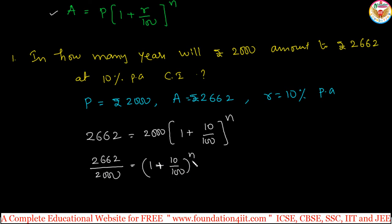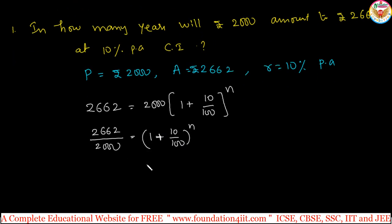To find the n value, we need to make the bases the same. That means we have to simplify this first. Simplify separately LHS and RHS. We can cancel by dividing by 2. Finally, I got 1331 by 1000.